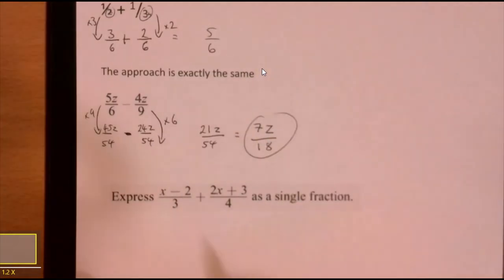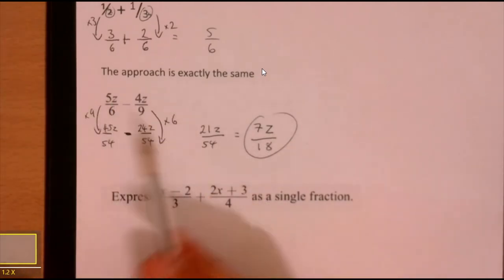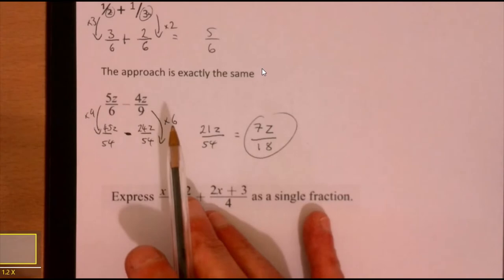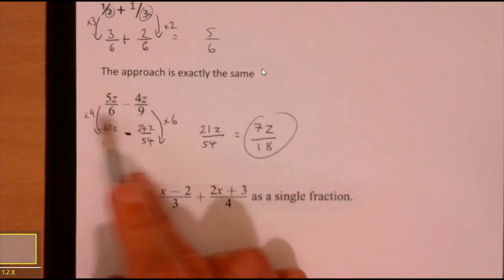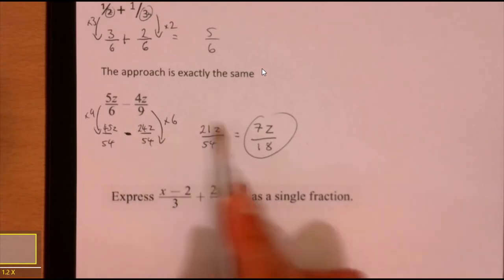So 3 goes into 21 seven times and it goes into 54 eighteen times. Right, so that's the answer. Now you could have got there a little bit quicker if you would have multiplied it by 3, multiplied by 2. I want to leave that out for a second just because it's that kind of more consistent approach, alright?